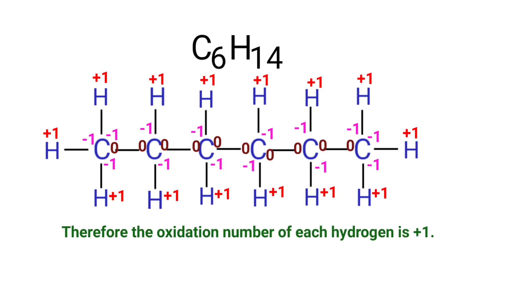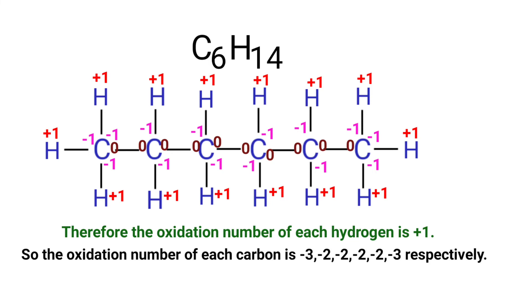Therefore, the oxidation number of each hydrogen is +1. So the oxidation number of each carbon in hexane is -3, -2, -2, -2, -2, and -3 respectively.